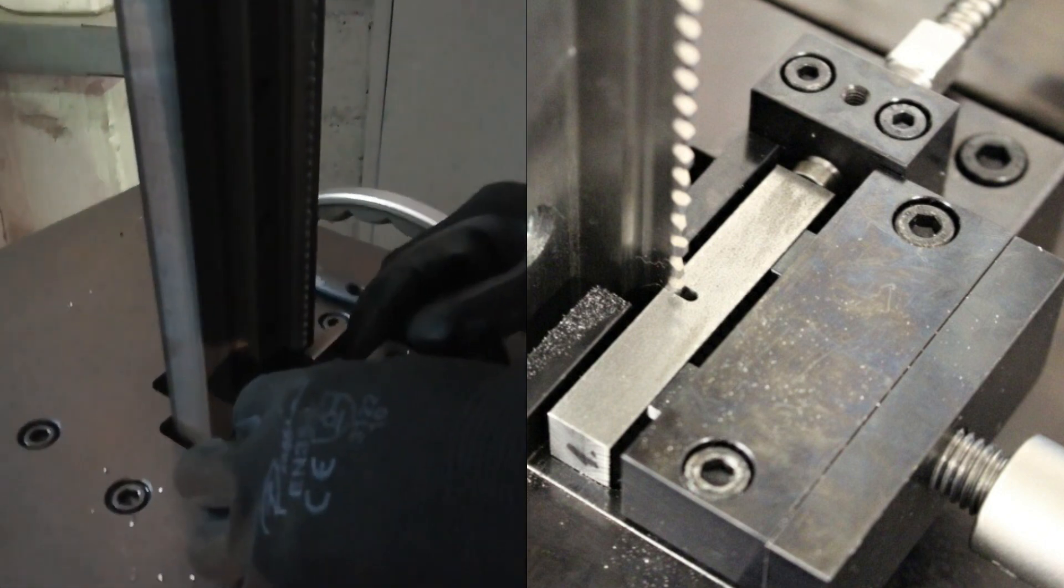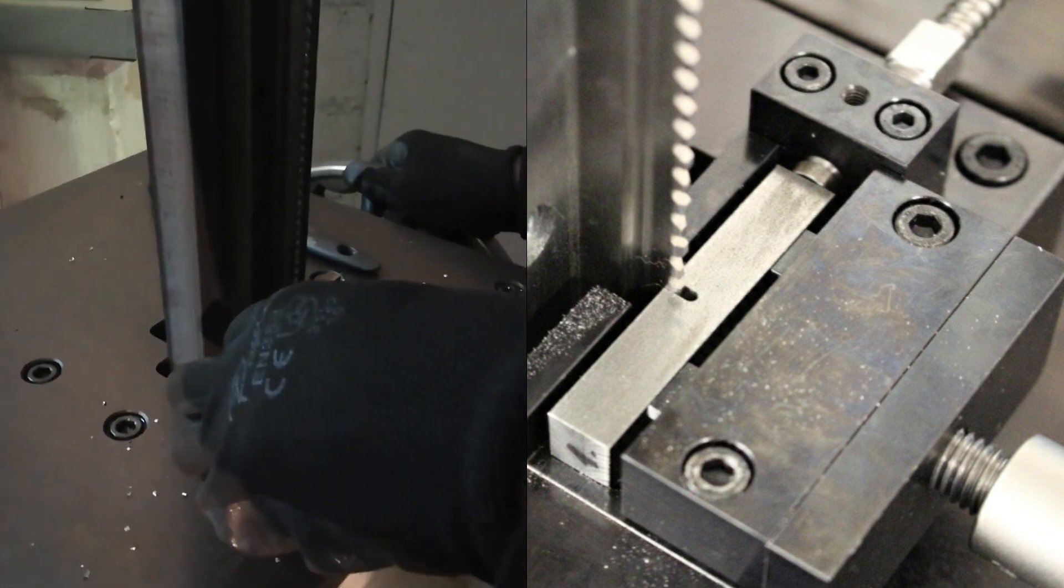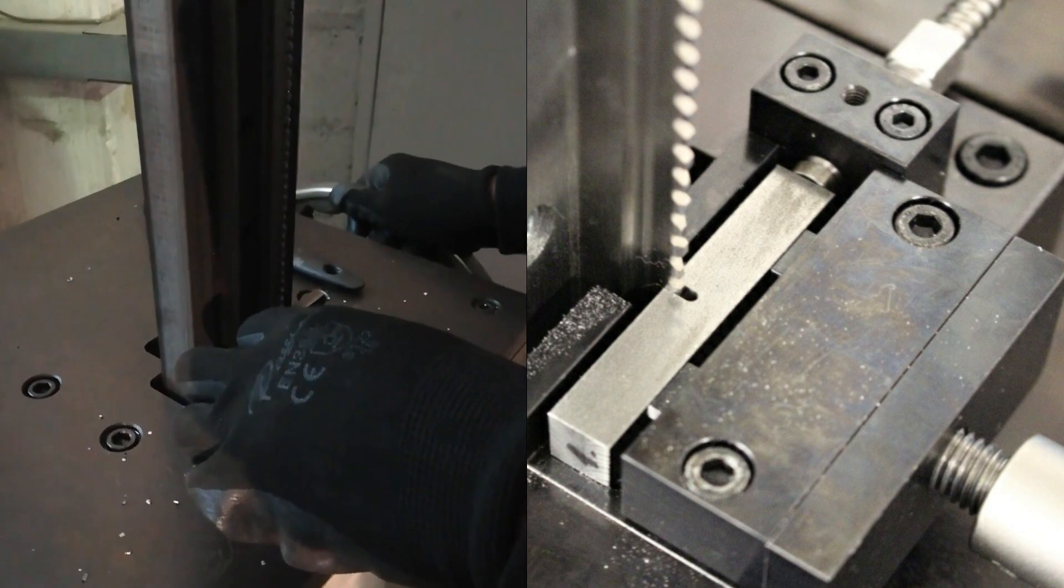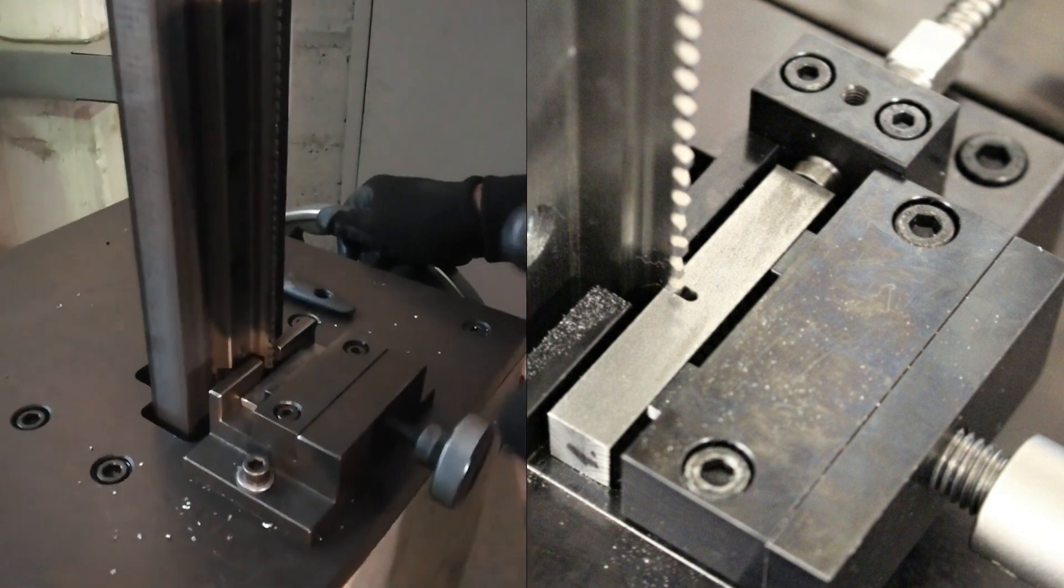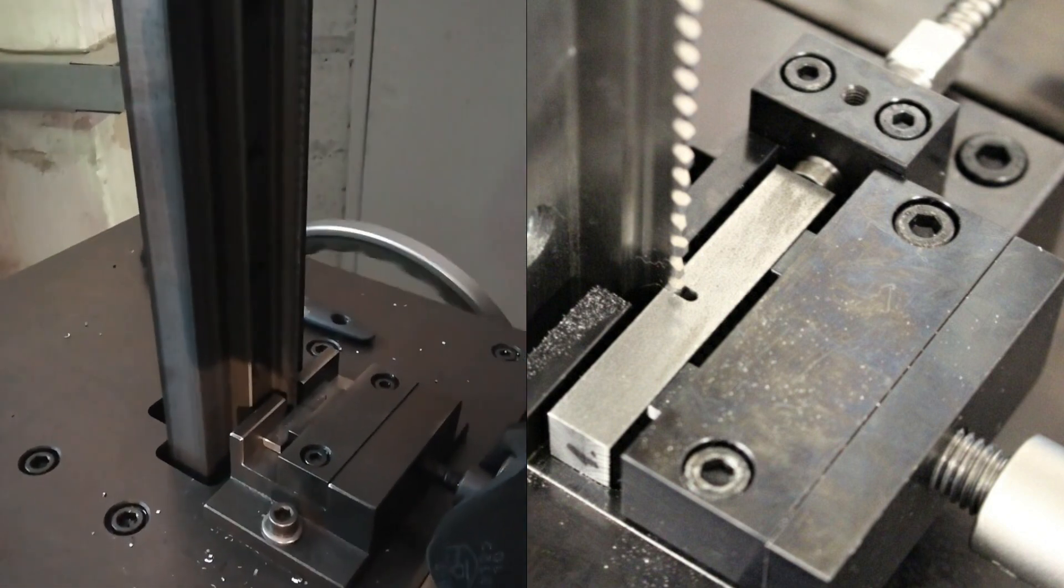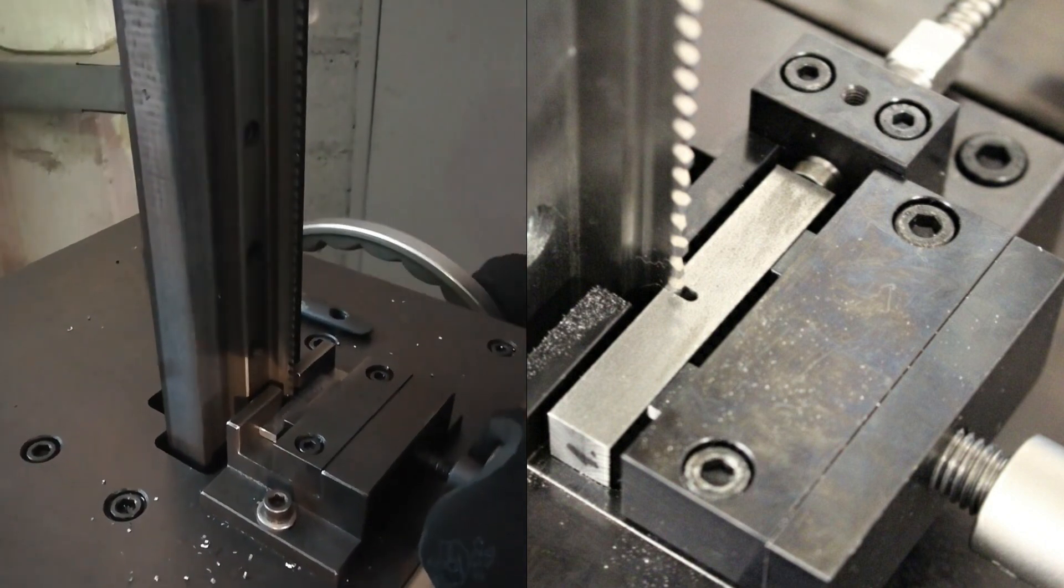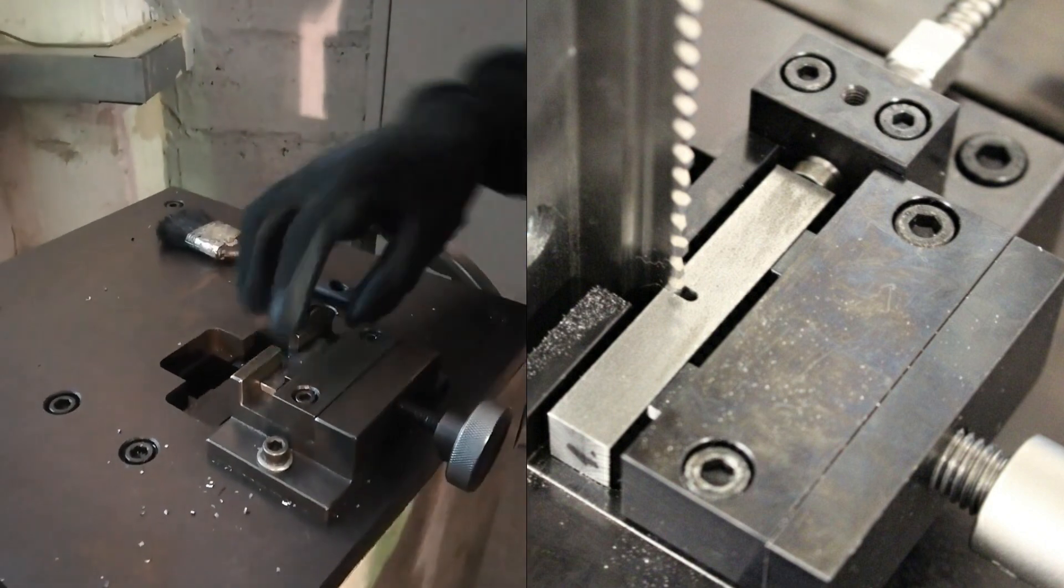Basically when cutting the sample we need to make sure that the center of our 55 millimeter is either in the weld if you are testing the weld, in the base material if you are testing the base material, or in the heat affected zone if we are testing the heat affected zone.